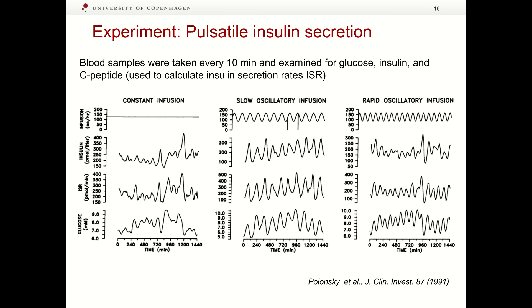This slide shows experimental results on the effect of subjecting self-sustained oscillations to an external forcing. Blood samples were taken every 10 minutes and examined for glucose, insulin, and C-peptide used to calculate insulin secretion rate. With constant glucose infusion, one can observe self-sustained oscillations. Two other figures demonstrate results obtained for a slow and relatively faster oscillatory glucose infusion. One can see how frequency of self-sustained oscillations changes with respect to infusion rate. Here we observe example of 1-to-1 synchronization phenomenon.